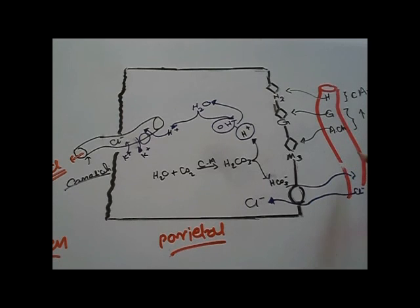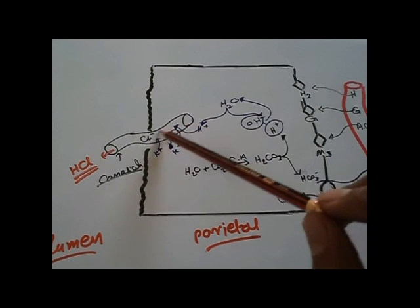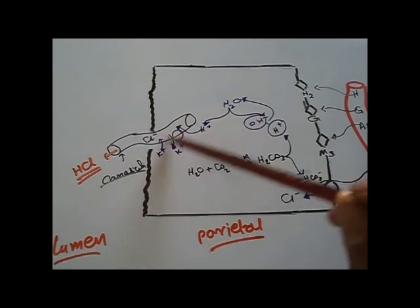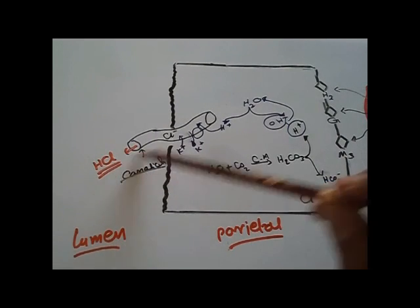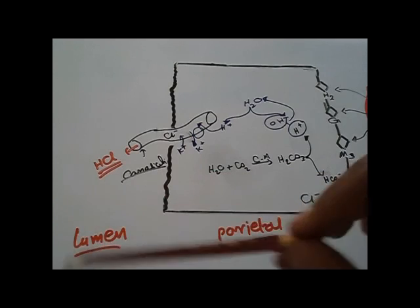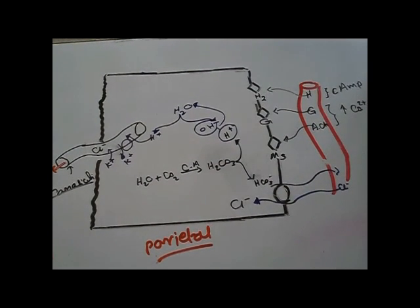The bicarbonate will be pumped out in exchange for chloride. Chloride will enter the canaliculi and unite with the H+ forming the HCl that will be secreted into the lumen. So this is the mechanism of the HCl secretion.